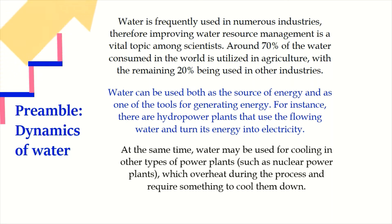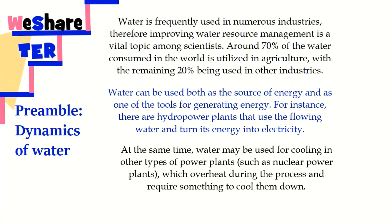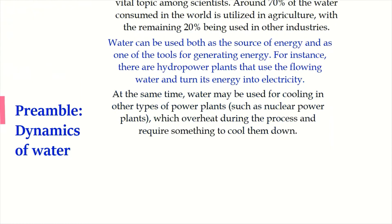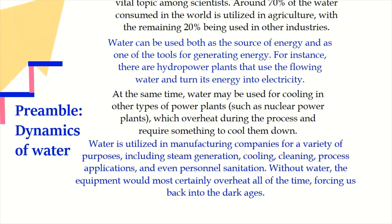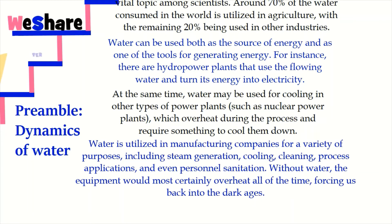At the same time, water may be used for cooling in other types of power plants, such as nuclear power plants, which overheat during the process and require something to cool them down. Water is utilized in manufacturing companies for a variety of purposes including steam generation, cooling, cleaning, process applications, and even personnel sanitation. Without water, equipment would most certainly overheat all of the time.